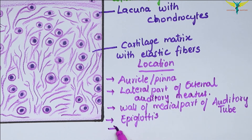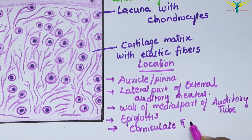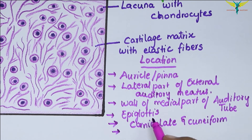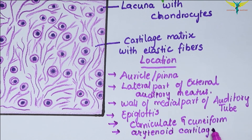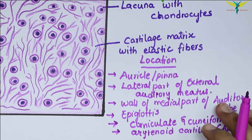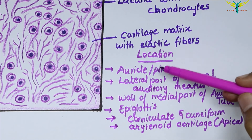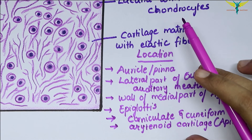The elastic cartilage is present in the epiglottis and also in two small laryngeal cartilages — the corniculate and the cuneiform. The apical part of the arytenoid cartilage also contains elastic fibers, but the major portion of the arytenoid cartilage is composed of hyaline cartilage.